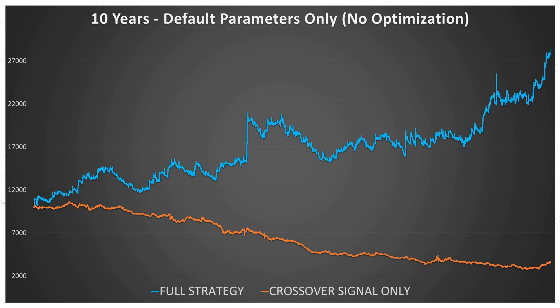The orange line represents the results from just the first component being implemented, which was the crossover signal — specifically the crossover of the Tenkan Sen line with the Kijun Sen line. As you can see, the results are not very good; it's a loss-making strategy. But as I explained last time, as we start to implement the filters of Ichimoku and also the noise filter that we're going to do today, this will improve the results significantly.